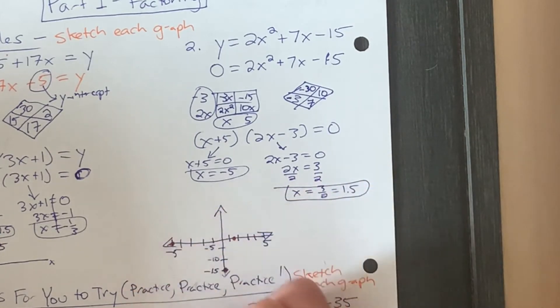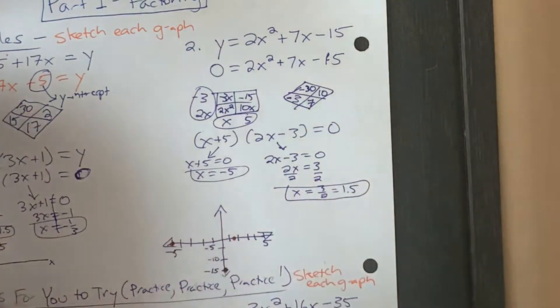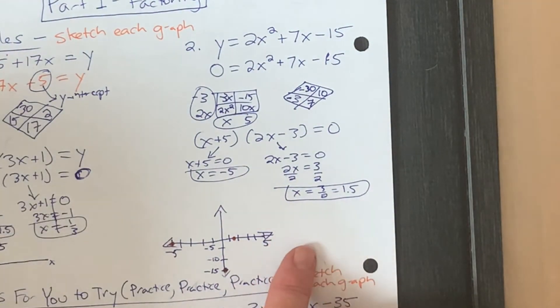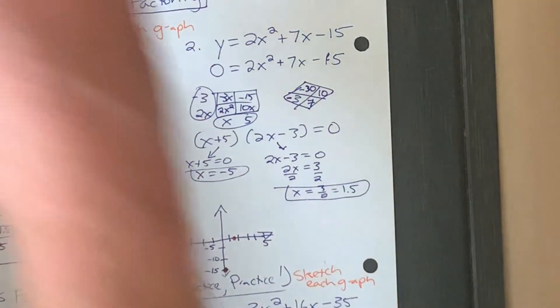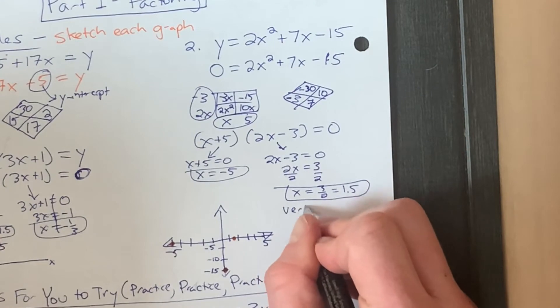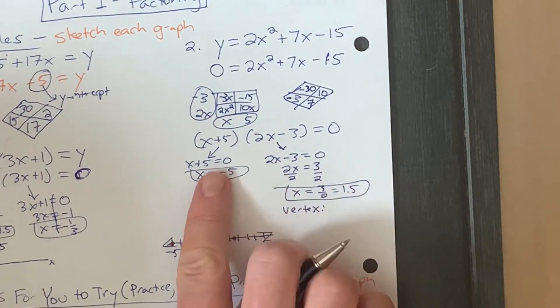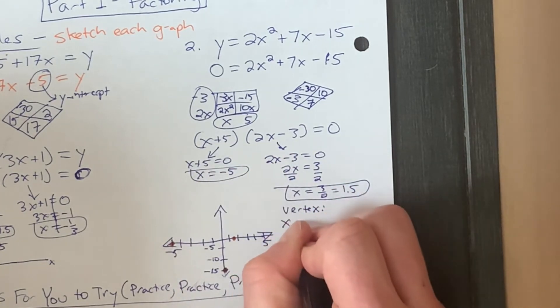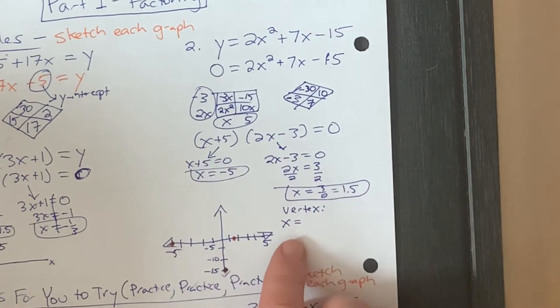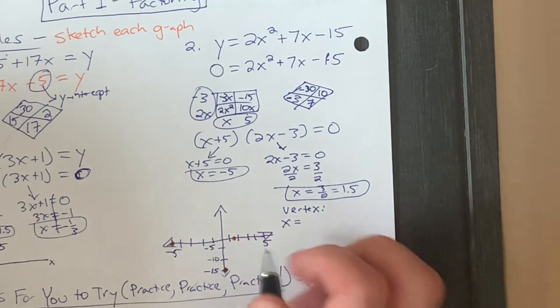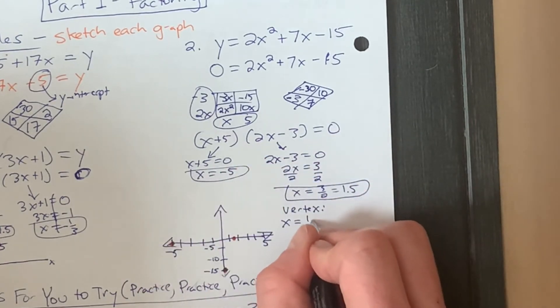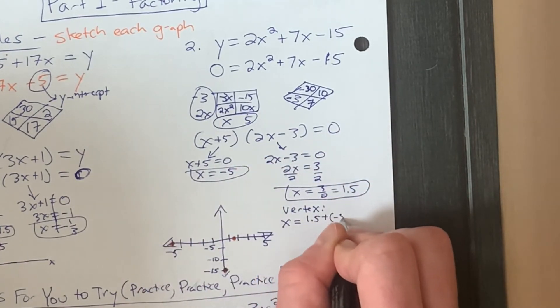So one thing I might do on this one here is, I might figure out where the vertex is, just to make my graph look a little bit more accurate. Vertex, your rule is here. You can take your roots here, remember? And that's going to tell you where the line of symmetry is. It's going to be at x equals, and then the average of the root. So I'm going to do 1.5 plus negative 5 over 2. And that's going to be 1.5 plus negative 5 is negative 3.5.